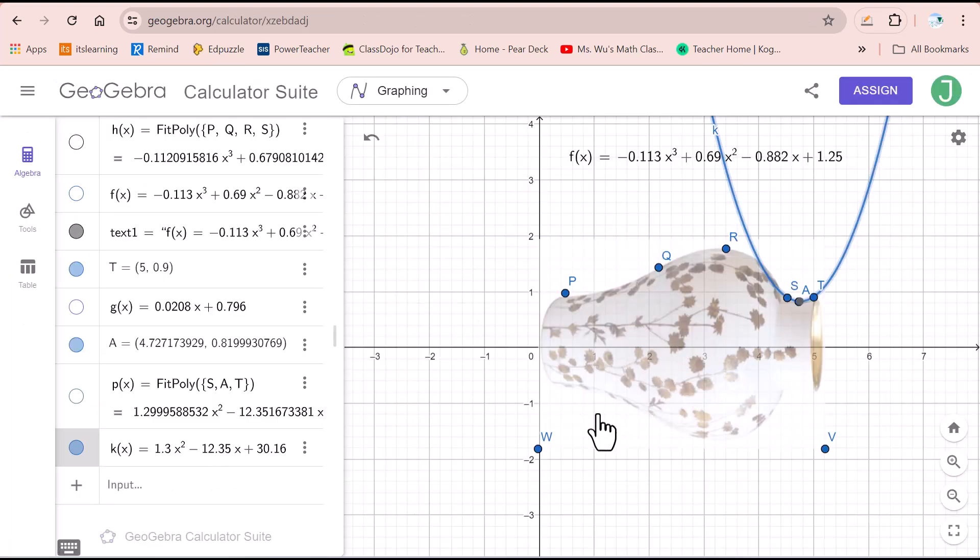I figured out the quadratic function, h(x), to model the curve from S to T. You could see it fit very well.